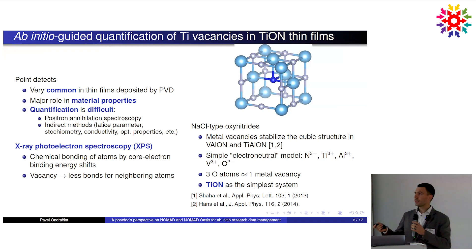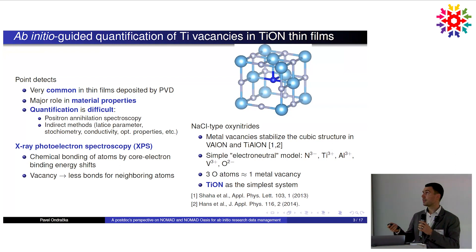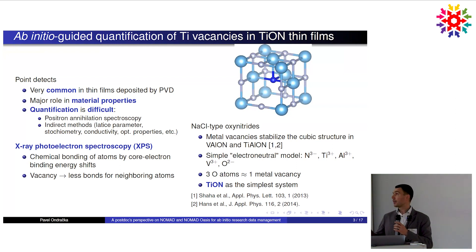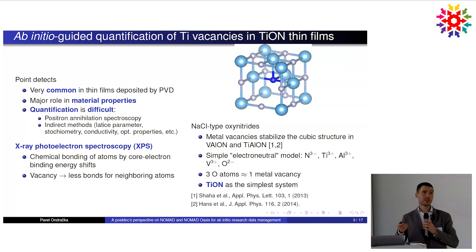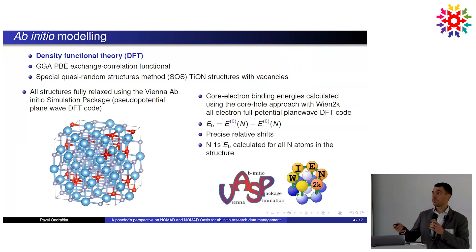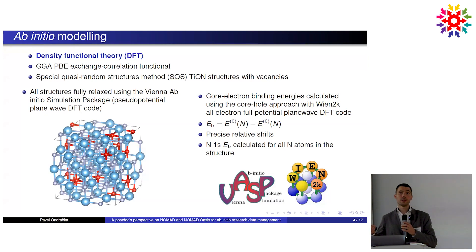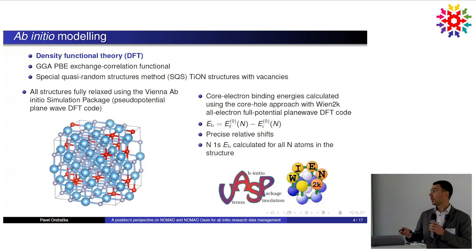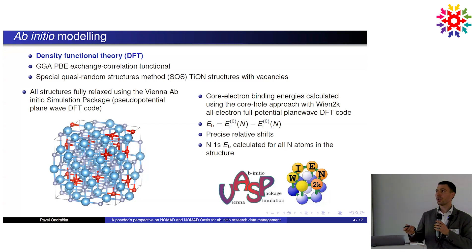We took titanium oxynitride as the simplest system and asked whether we can see something with XPS. I did some calculations — pretty much standard DFT with the GGA-PBE functional — created structures with vacancies, and then calculated binding energy shifts of the nitrogen 1s level using the all-electron Wien2K code with the core hole approach.